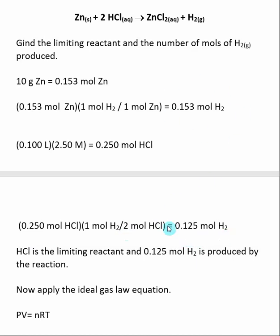I then compare these two numbers and find out which one produces the smallest amount of product. In this case, HCl produces 0.125 mole H2. That means that HCl is the limiting reactant, and that 0.125 mole of H2 is the amount of gas that I make as my product.